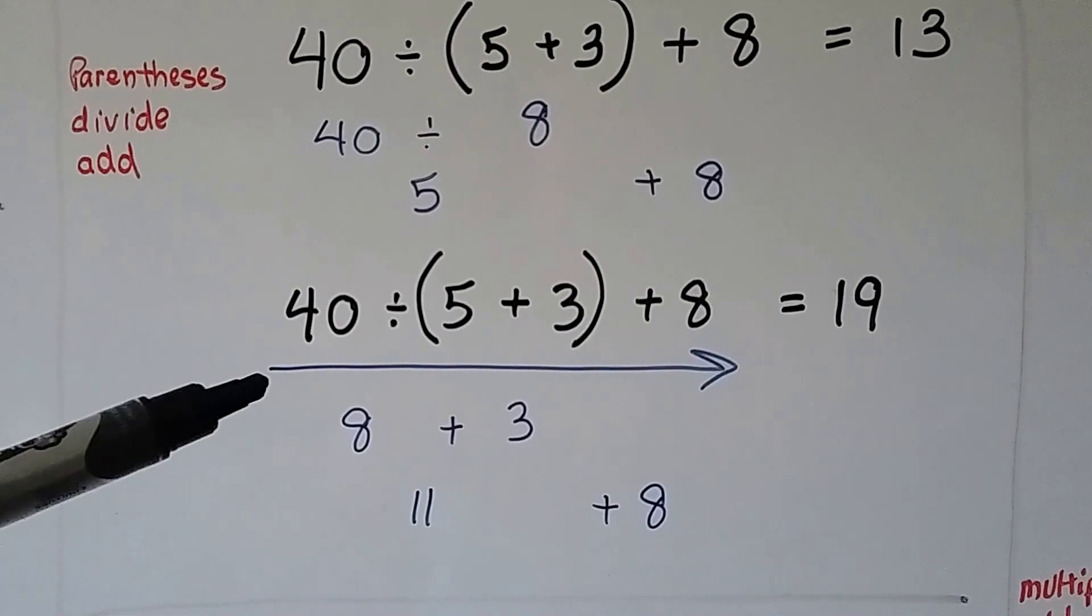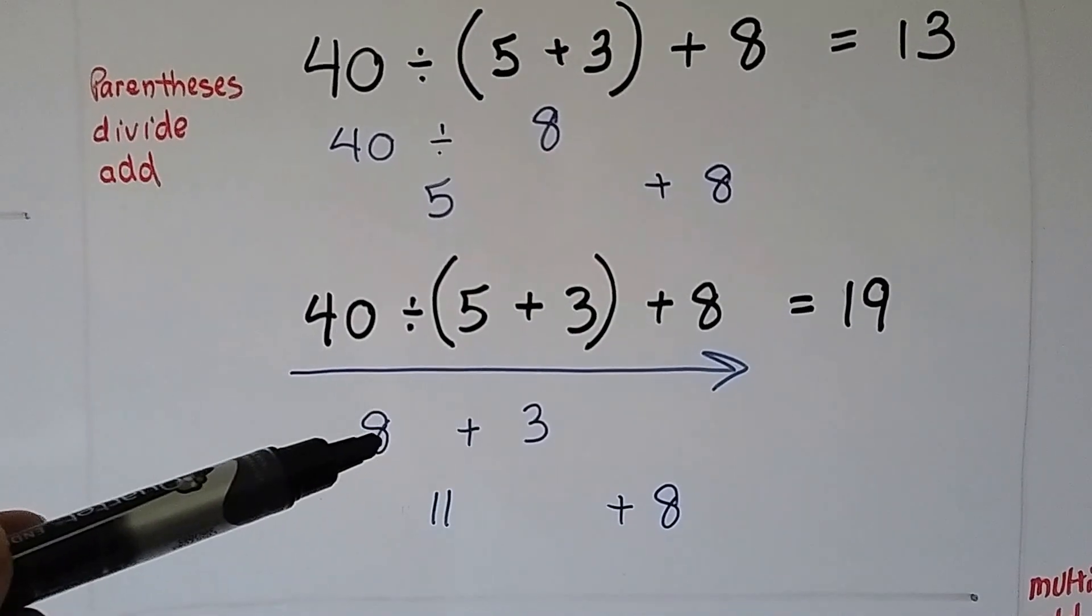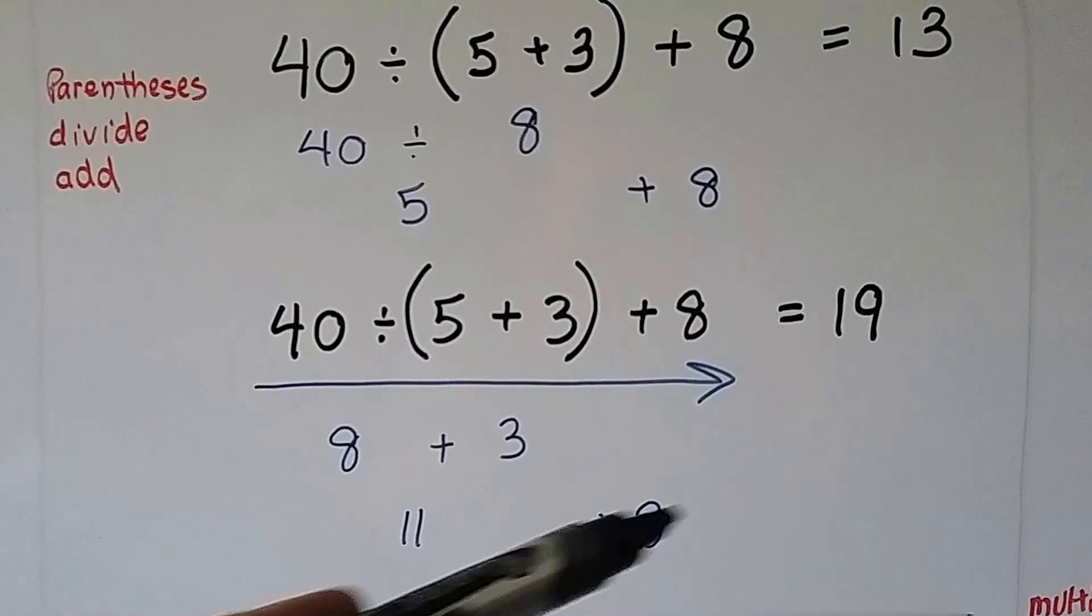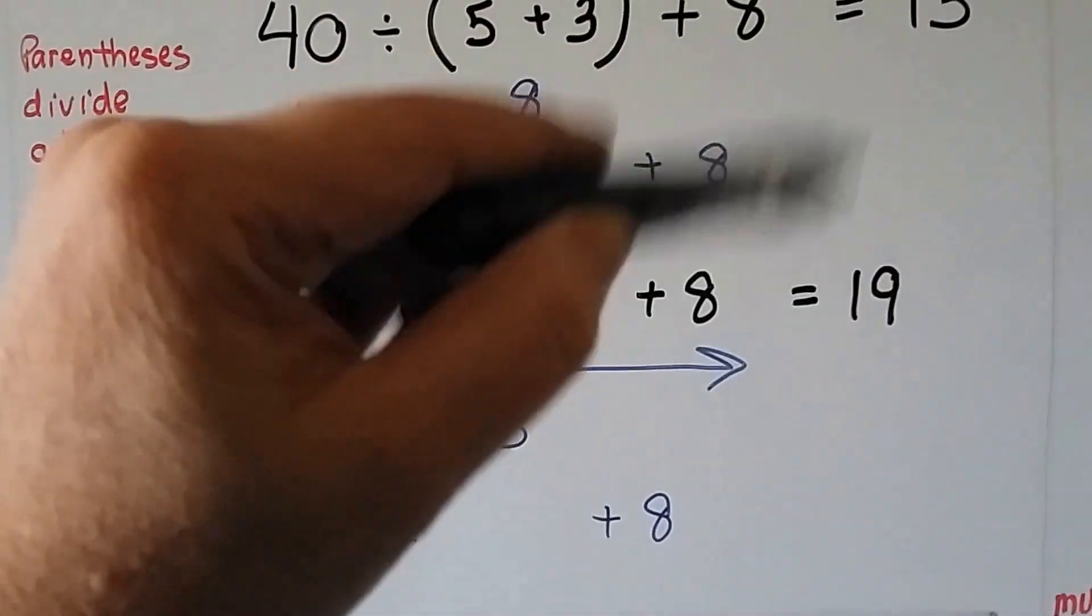If we had just gone straight across, we would have had 40 divided by 5, which is an 8. Now we would add that 3 and get an 11. Now we would add that 8 and get a 19. That's the difference.